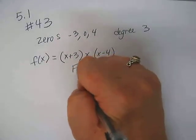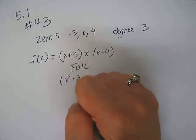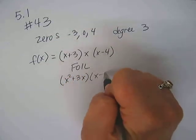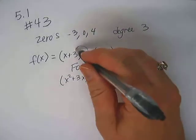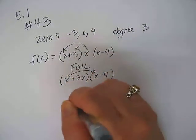Now we just FOIL. So I'll have x squared plus 3x times x minus 4, because I distributed the x first. Now let's FOIL it.